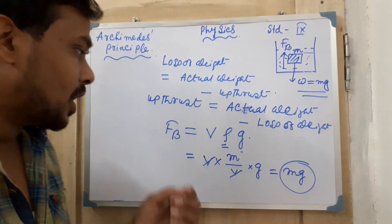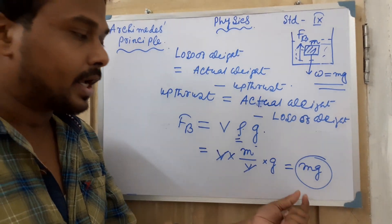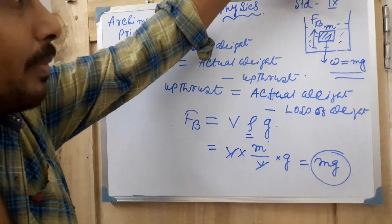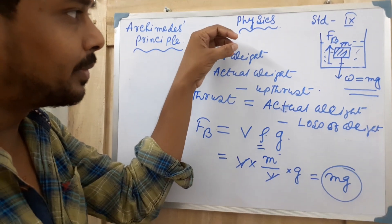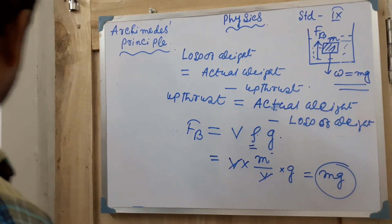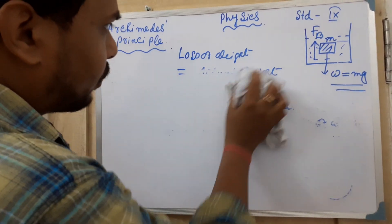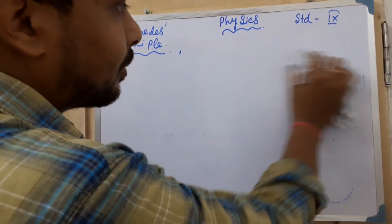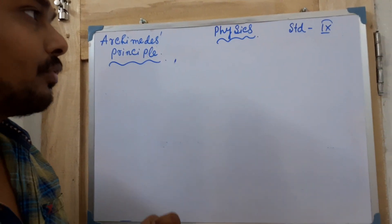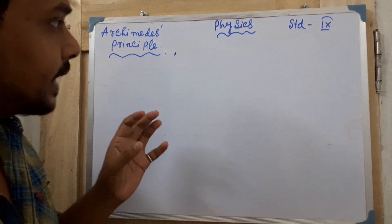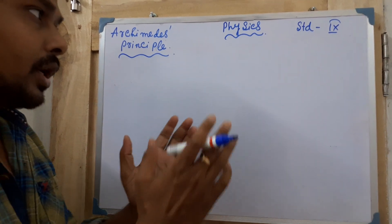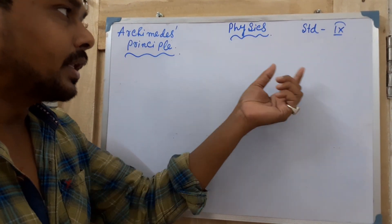M×g is a type of weight — not the gravitational weight of the body, but the weight of the liquid which is displaced from that position. When you place a body inside a liquid, some liquid is displaced, and the weight of that displaced liquid is exactly equal to the upthrust. This is the Archimedes principle: upthrust equals the weight of the liquid displaced.